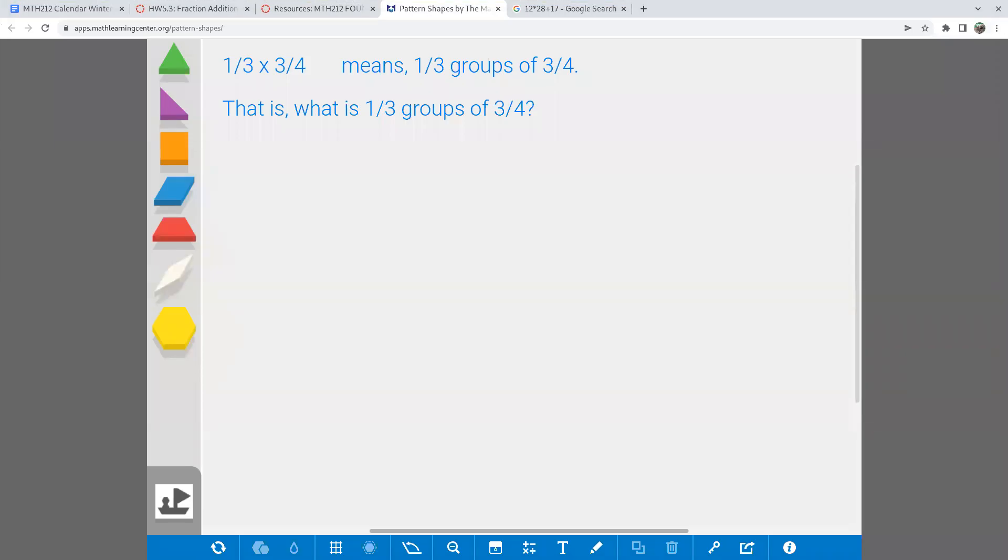I want to figure out what one-third times three-fourths is, with the idea that multiplication means groups of. So one-third groups of three-fourths. Another way I could say that is, what is one-third groups of three-fourths?